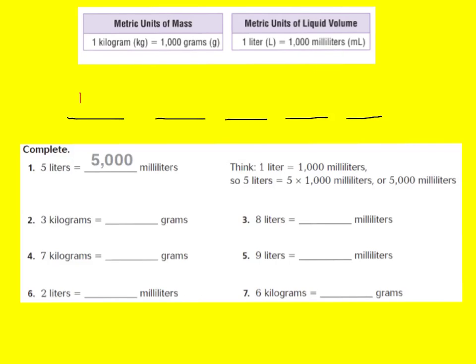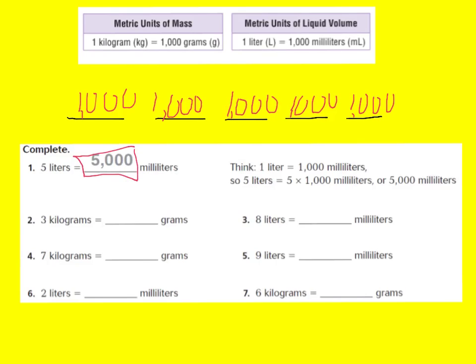I'm going to put 1,000 in each one and count: 1,000, 2,000, 3,000, 4,000, and 5,000. So I know that 5 liters equals 5,000 milliliters. Or I could also say 5 times 1,000, and I would get 5,000 also.